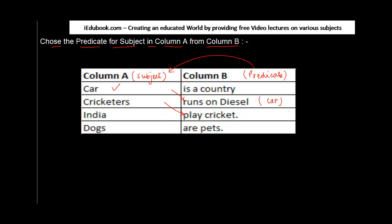Playing cricket reflects what is done by the subject, which is cricketers. Third, India — India is a country, yes, this is correct, because the predicate 'is a country' tells us something about the subject India. Fourth, dogs are pets — if dog is the subject, then pet is the predicate because it tells us about one of the characteristics present in dogs. Dogs need not necessarily be pets; they can even bite you as well.